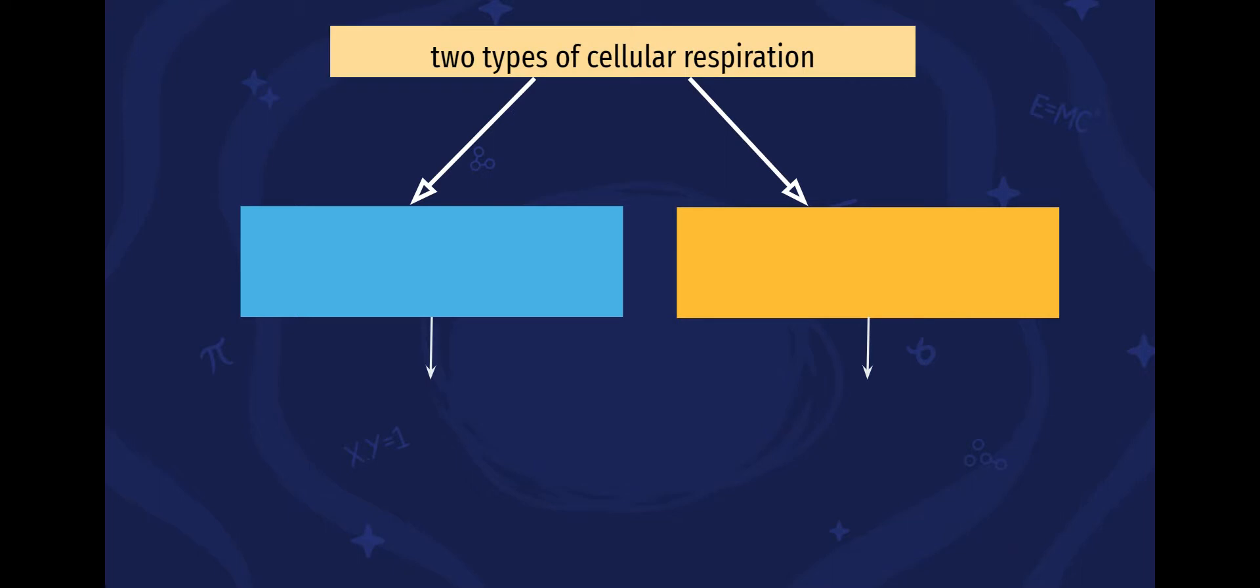To kind of finish off today, we need to talk about two types of cellular respiration. The one that you guys are going to be most familiar with and understand is what we call aerobic cellular respiration. Now, you may not know what's called aerobic, but essentially what it does is it uses oxygen and it makes a lot of ATP.